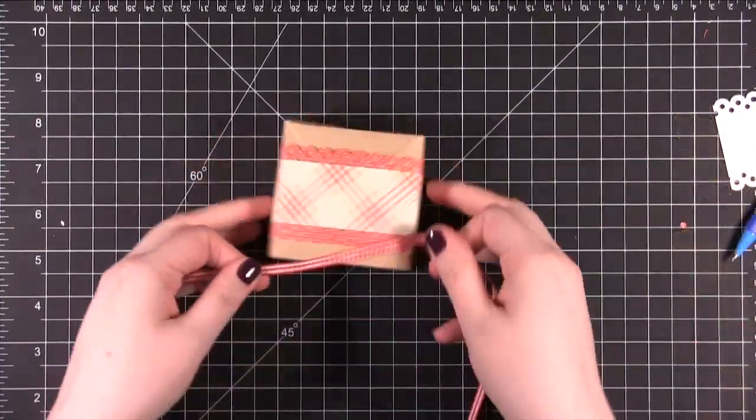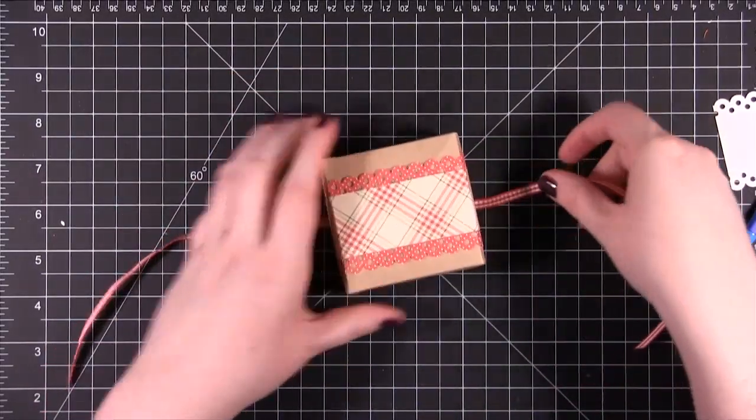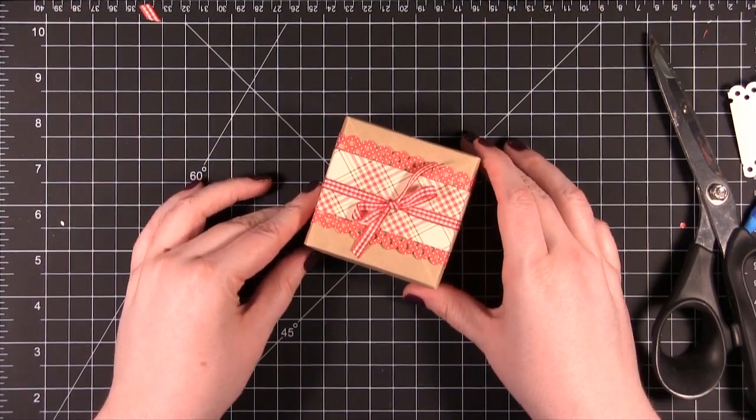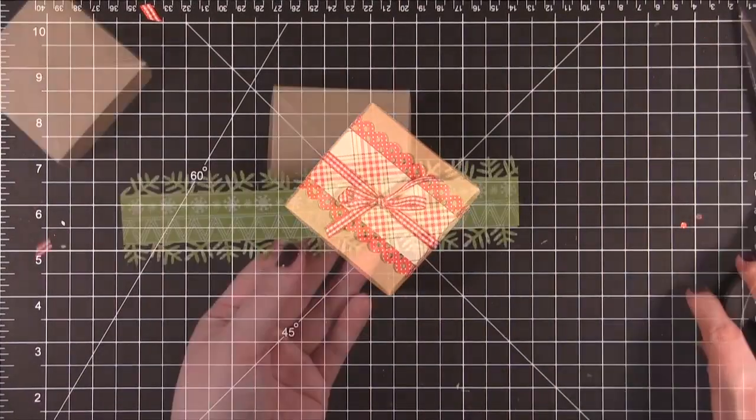I have a scrap of red gingham. Just tie that around. So there's another way to use the punches to decorate the box.